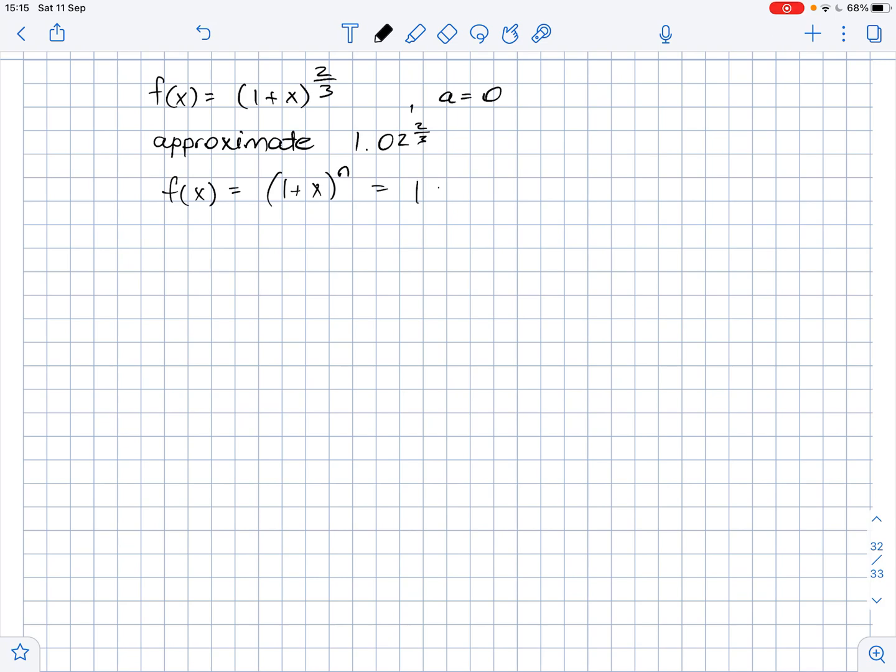The binomial series centered at zero is given as 1 + nx + n(n - 1) over 2 factorial times x squared plus n(n - 1)(n - 2) over 3 factorial times x cubed and so on.